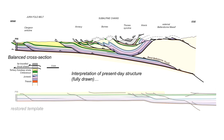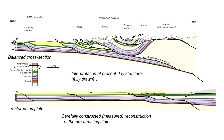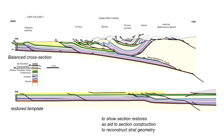For example, we can see how the geology connects across the top of the subalpine chains. The restored template is a carefully constructed reconstruction of the pre-thrusting state, where the beds are measured and reported back from the balanced section to show their disposition before thrusting occurred. This attribute — that the present-day cross-section is restorable onto a template to show a meaningful geological arrangement — is what makes the cross-section balanced. The restored template also shows that the section is restorable and aids in its construction, and can be used to explore the attributes of the pre-existing basin geometry.